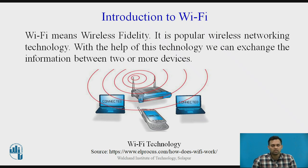Wi-Fi technology works in two different modes. In the first mode, data can be sent from server to client, and in another mode, data can be sent from client to client. Generally, Wi-Fi technology is used for computers and laptops, but nowadays Wi-Fi technology is efficiently used by mobile devices for sending and receiving data.